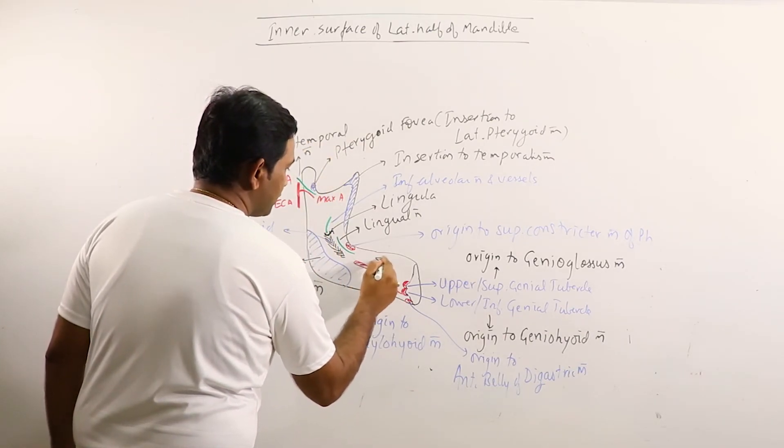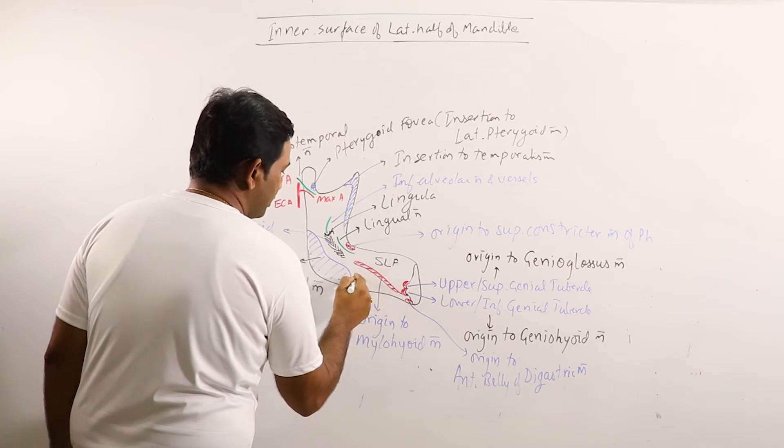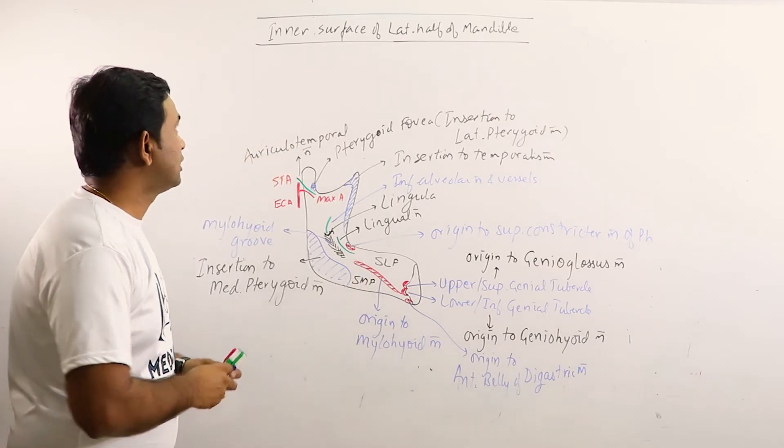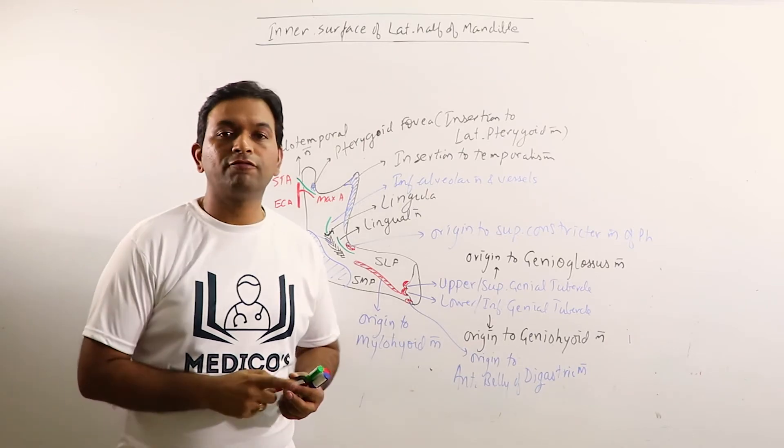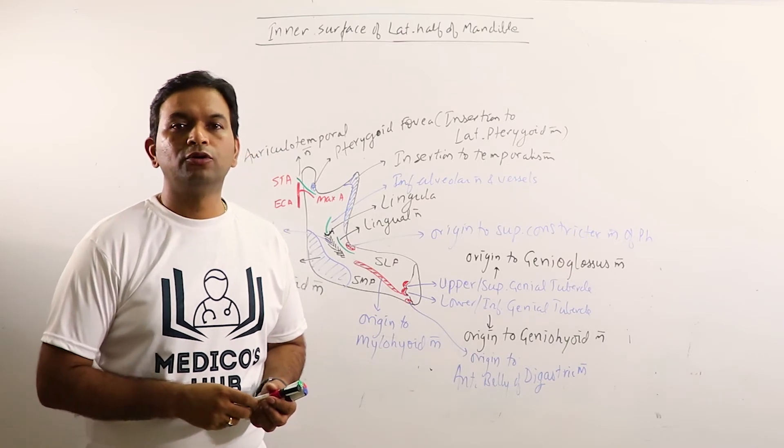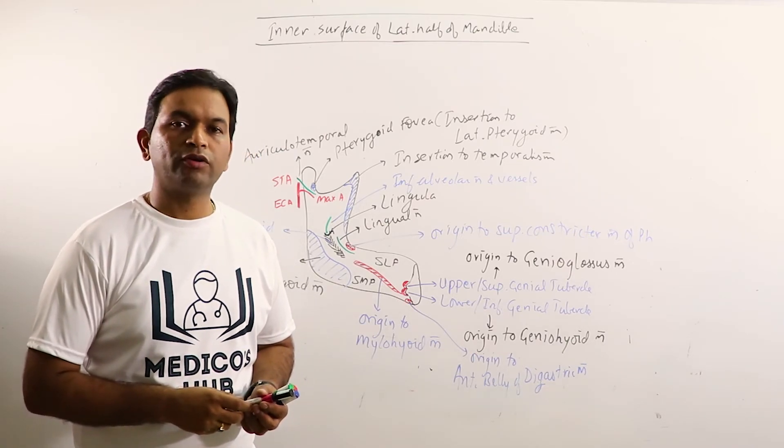Here we can observe the sublingual fossa and this is the submandibular fossa. So this is the inner surface of left half of the mandible. Hit the like button, share and subscribe our channel to get the latest updates and notifications.